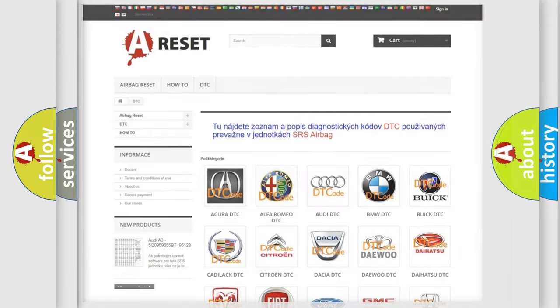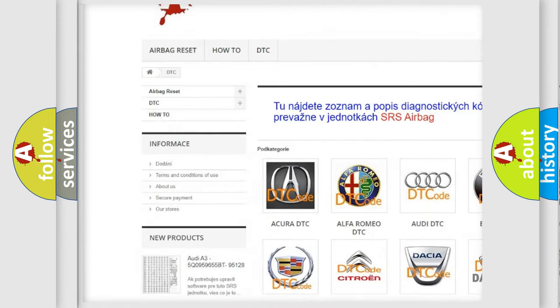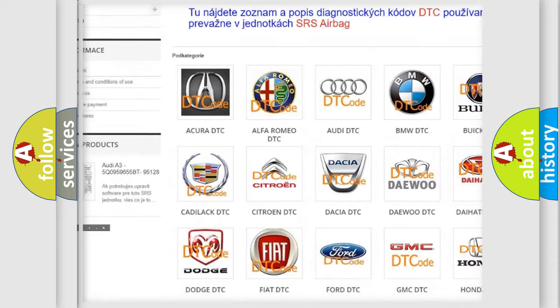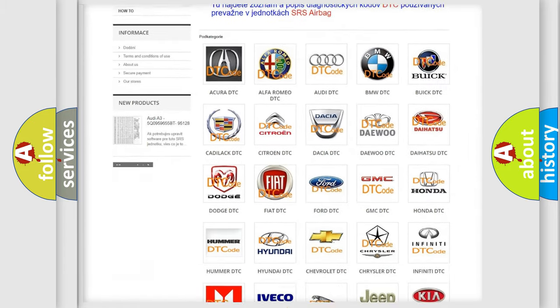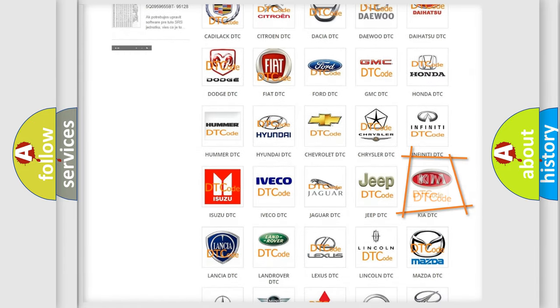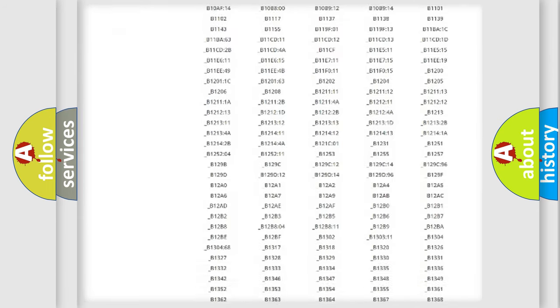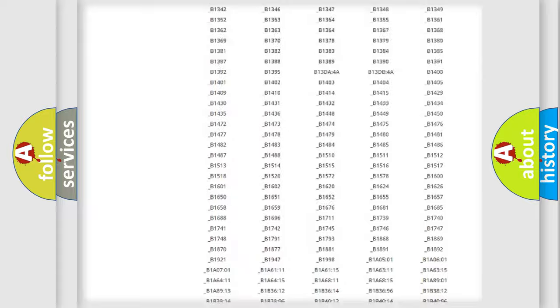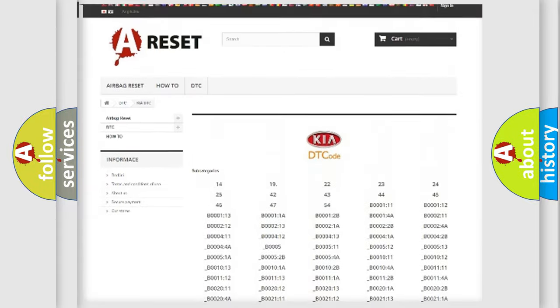Our website airbagreset.sk produces useful videos for you. You do not have to go through the OBD2 protocol anymore to know how to troubleshoot any car breakdown. You will find all the diagnostic codes that can be diagnosed in KIA vehicles, and many other useful things.